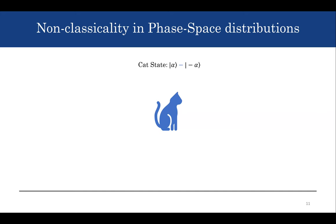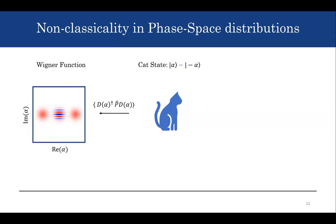I'll talk about phase space. The most well-known representation is the Wigner function, which is defined via the parity operator and is readily available in circuit QED experiments by simply measuring parity on a timescale of chi. Wigner functions contain all information about the cat state — the size of the cat in the blobs and the coherence (non-classicality) in the fringes. However, since we operate in the low dispersive coupling regime, we don't have direct access to the Wigner function because it scales with chi, which is quite small.